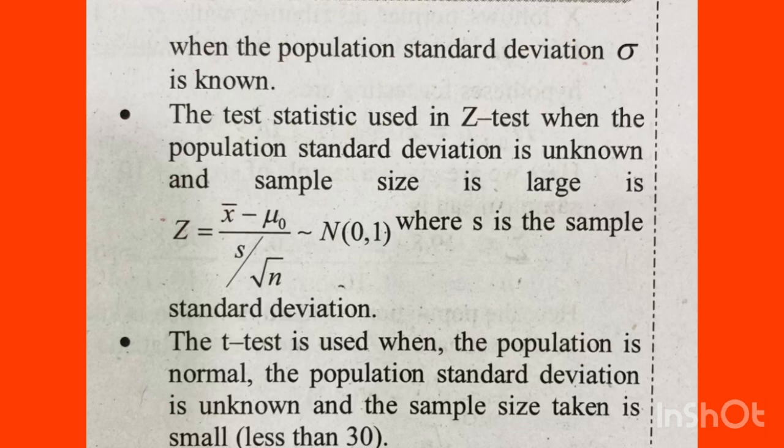When the sample size is large and the population standard deviation is unknown, we use the equation z = (x̄ - μ) / (s / √n), where s is the sample standard deviation. Learning this z-test equation is very important and will help you score well.